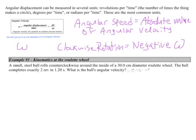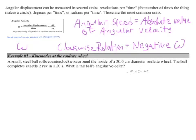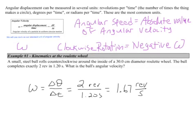So we look at an example. A small steel ball rolls counterclockwise around the inside of a 30-centimeter diameter roulette wheel. The ball completes exactly two revolutions in 1.2 seconds. What's the ball's angular velocity? 1.67 revolutions per second. So here we are using revolutions per second as our unit for angular velocity. And because we're told it's a counterclockwise rotation, this is a positive quantity.